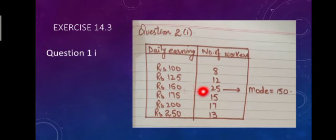the observation with the greatest frequency. 150 rupees is the mode because 25 workers have that earning. That's why 150 rupees is the mode.